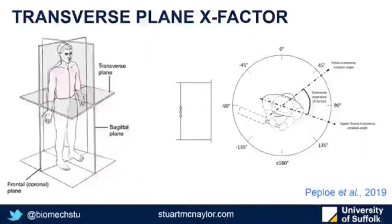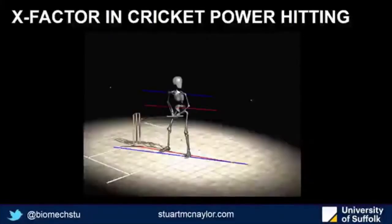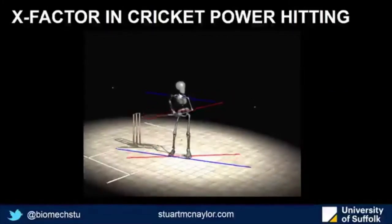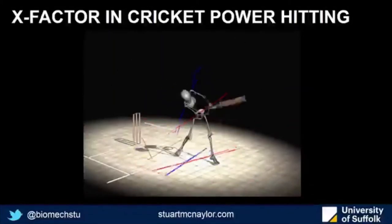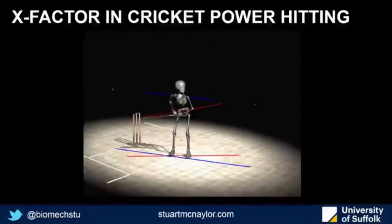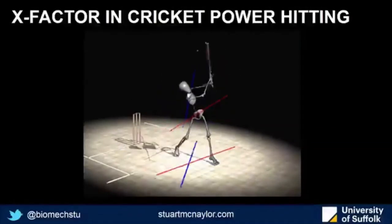We're not simply talking about how far they rotate — it's the separation between the two segments, how much further the thorax rotates past the pelvis. Displayed visually, a red line through the pelvis and a blue line through the thorax are both mapped onto the floor. As the ball is released there's no separation; we get separation during the backswing, then recoil during the downswing.